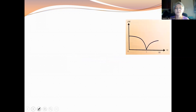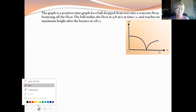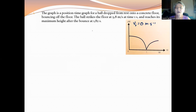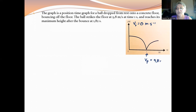In our first example, we've got the position-time graph for a ball that is dropped from rest. So the initial velocity is zero meters per second. And it falls onto, it bounces off a concrete floor. The ball strikes the floor at 9.8 meters per second at time one second. The velocity with which it hits the ground the first time at one second is 9.8 meters per second.